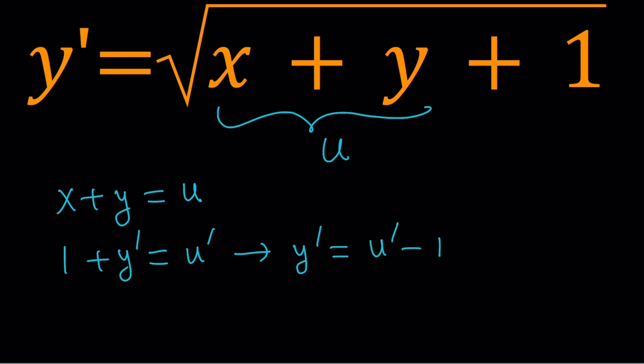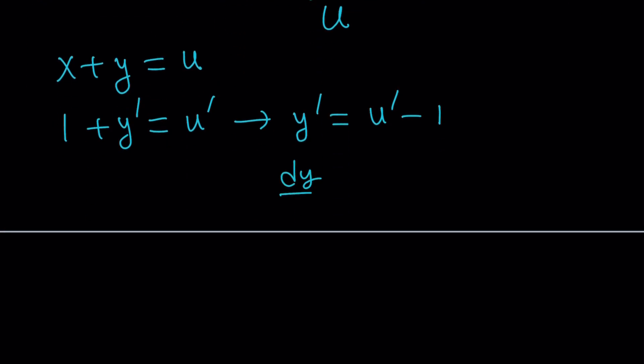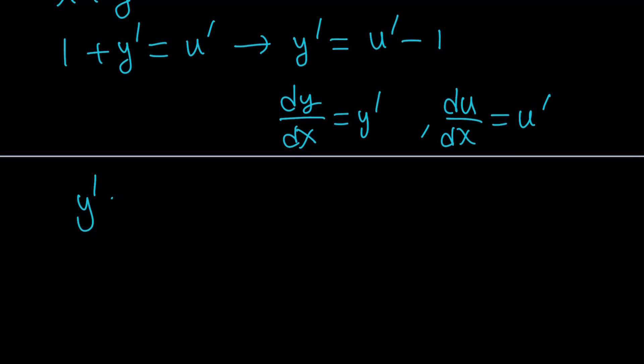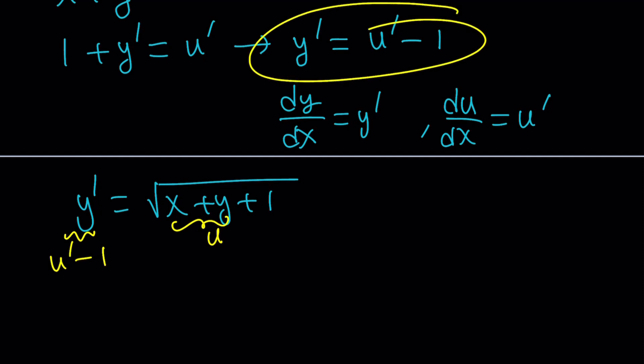And then now, let's go ahead and write it this way. y prime is dy over dx. And u prime is du over dx, right? But here's what I'd like to do. This is y prime. And this is u prime. Let's go ahead and set it up first. Now, I want to do the following. In my original equation, I had y prime equals the square root of x plus y plus 1. Now, I'm going to replace x plus y with u. And this with u prime minus 1. Make sense? From here.